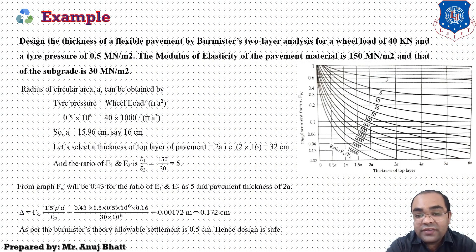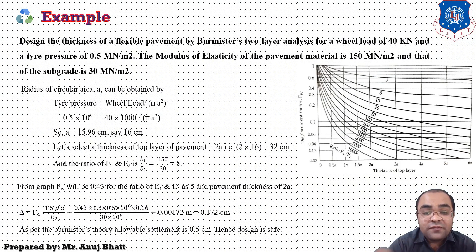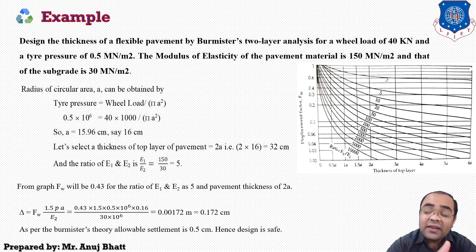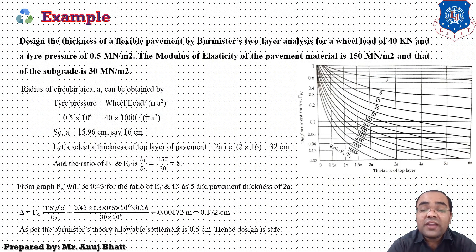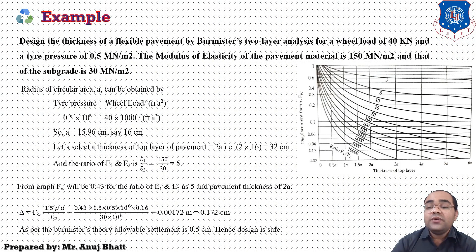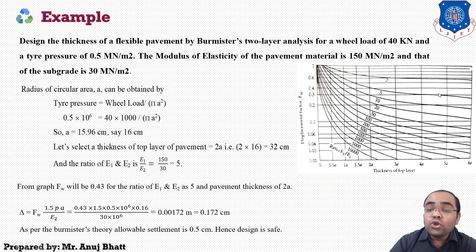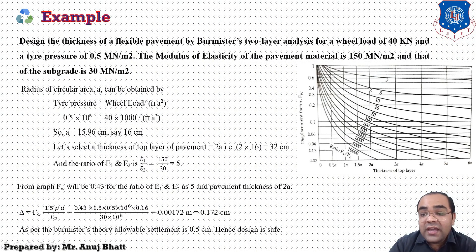Now take the ratio of E1 to E2: 150 divided by 30 gives a ratio of 5. We need the displacement factor F_w, found from a standard graph using the thickness of the top layer and the E1/E2 ratio. On the graph, the curve for E1/E2 equals 5 at a thickness of 2a intersects at a point indicating the displacement factor.